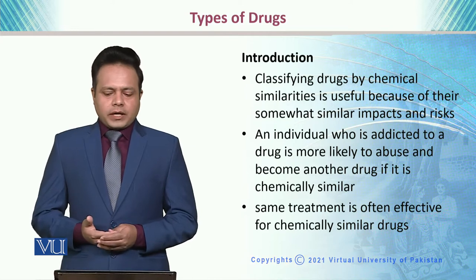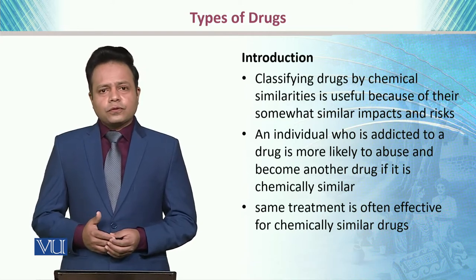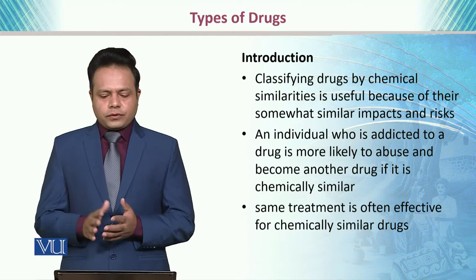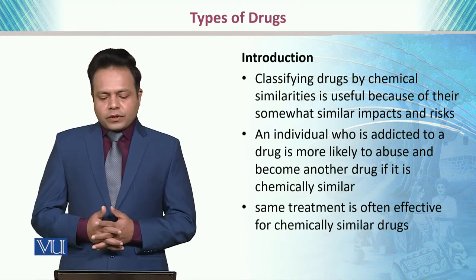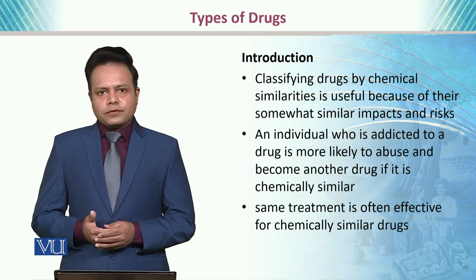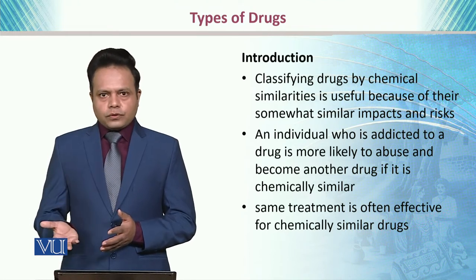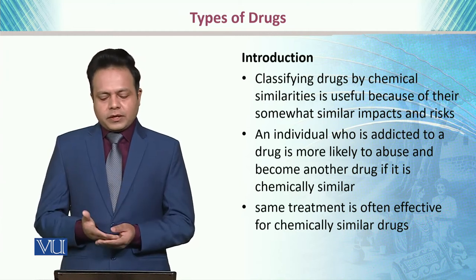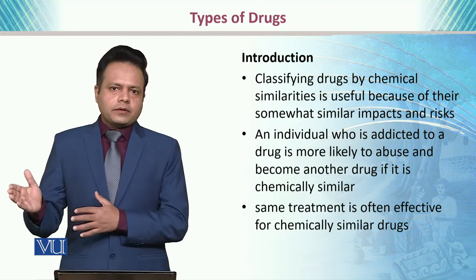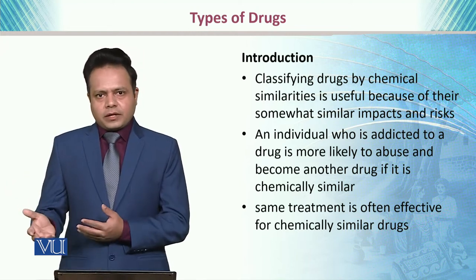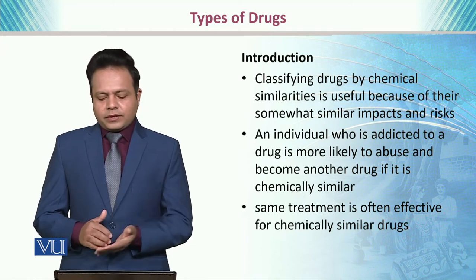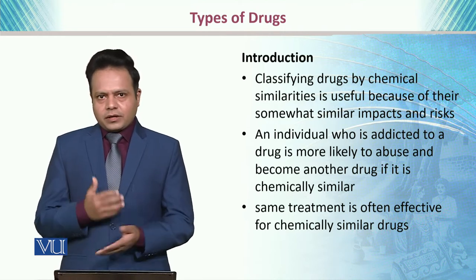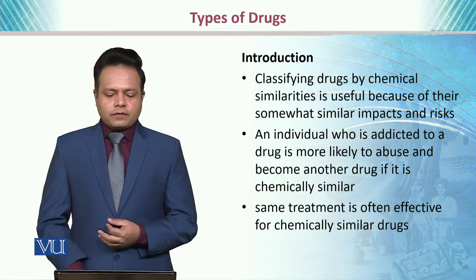Classifying drugs by chemical similarities is useful because of their somewhat similar impacts and risks associated with health. An individual who is addicted to drugs is more likely to abuse a chemically similar or identical substance, or it can produce different effects if the chemicals are different. The same treatment is often effective for chemically identical drugs. Let's see what are the similarities and differences of these drugs.